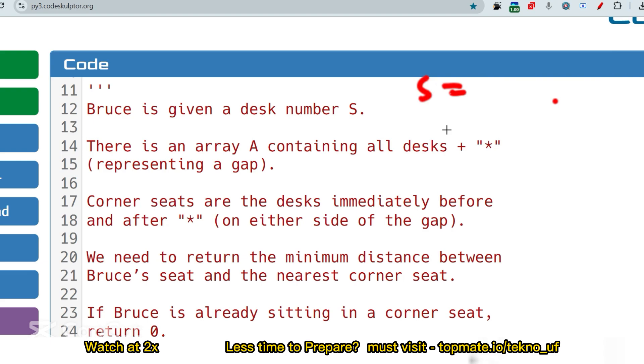There should be some numbers plus stars. Gap is the star. Corner seats are the best immediately before and after the star. That means whenever, wherever the star will be there, the before of that element the star and after that star, those elements would be called as corner.